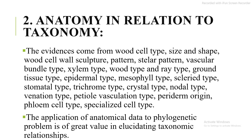Second, anatomy in relation to taxonomy. The evidences come from wood cell type, size and shape, wood cell wall sculpture pattern, stelar pattern, vascular bundle type, xylem type, phloem type, ray type, ground tissue type, epidermal type, mesophyll type, spheric type, stomatal type, trichome type, crystal type, nodal type, venation type, petiole vascularization type, periderm origin, phloem cell type, and specialized cell type.